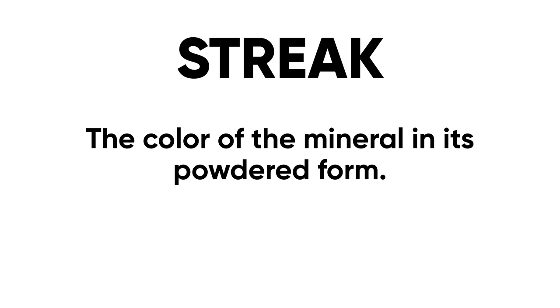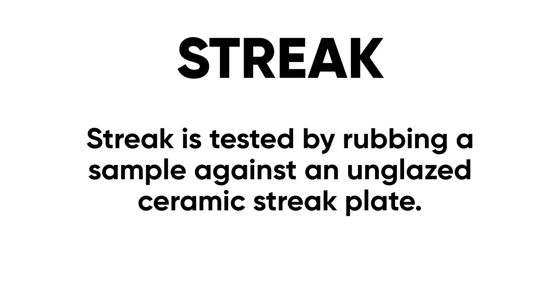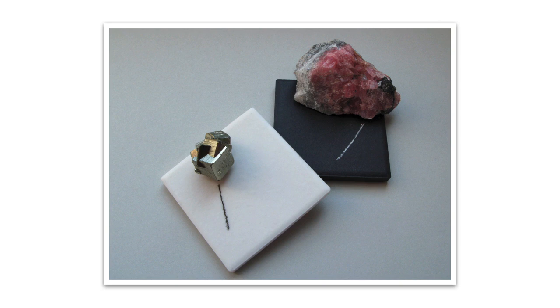So we have to turn to some other physical characteristics to help us. Another characteristic we can use is called streak — the color of the mineral in its powdered form. The way we test it is we take the sample and rub it against an unglazed ceramic streak plate. These look like little tiles and come in black and white. You rub your mineral on the streak plate, which breaks off a little bit of the mineral in its powdered form so you can identify the color as a powder. You might think the color will be the same whether it's a powder or not, but that's not necessarily the case.